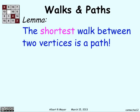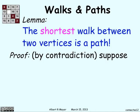We're going to start by showing that the shortest walk between two vertices is a path, and we're going to prove it by contradiction.